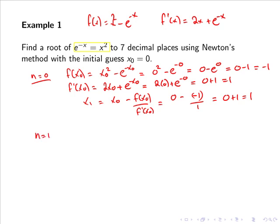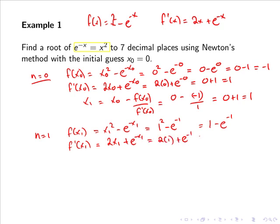So now on the second iteration. This time f of x1 is equal to x1 squared minus e to the minus x1. So 1 squared minus e to the minus 1 or 1 minus e to the minus 1. While f dash of x1 is equal to 2 times x1 plus e to the minus x1, so 2 times 1 plus e to the minus 1, so 2 plus e to the minus 1.